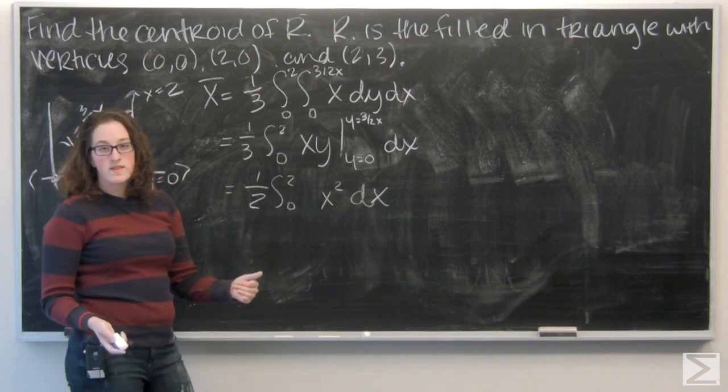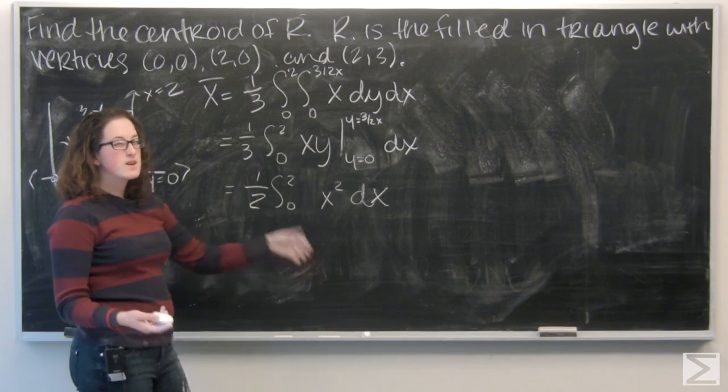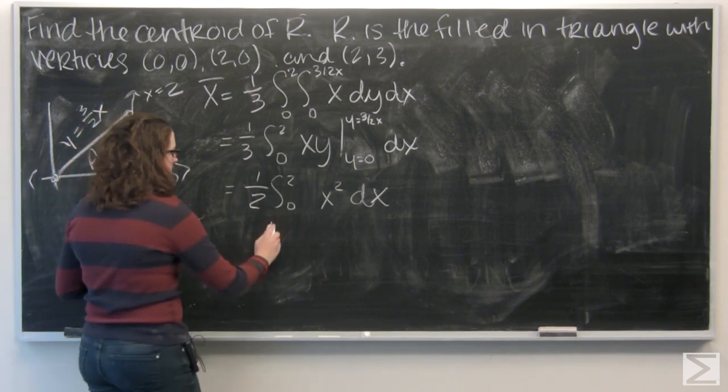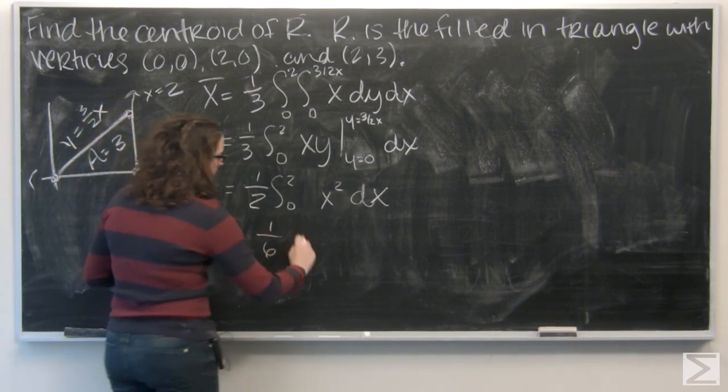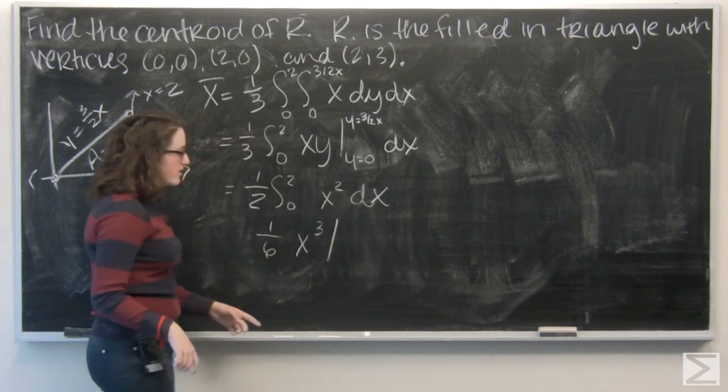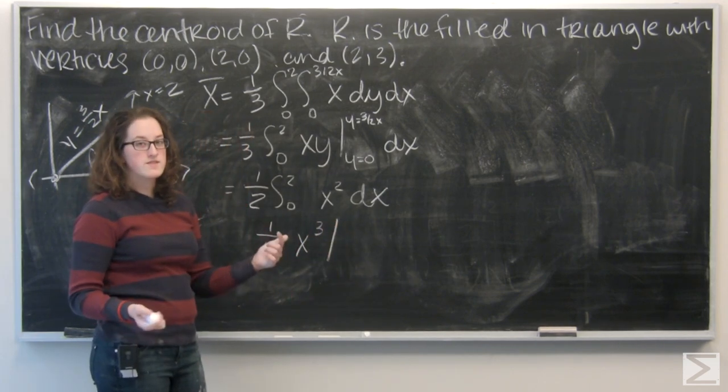Now, let's integrate with respect to x. Integral of x squared is going to be 1 third x to the third. I'm going to pull that 1 third out, make it a 1 sixth. And then, I want to evaluate from x equals 0 to x equals 2.